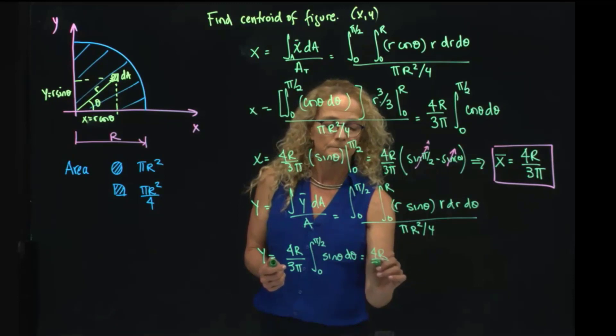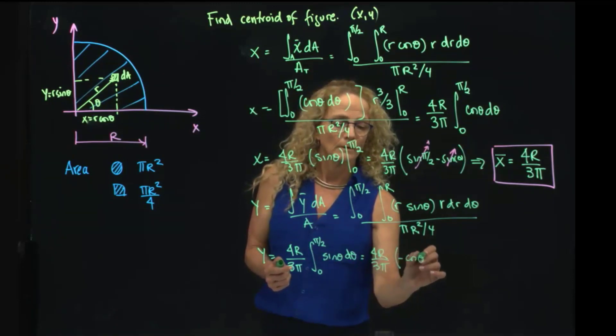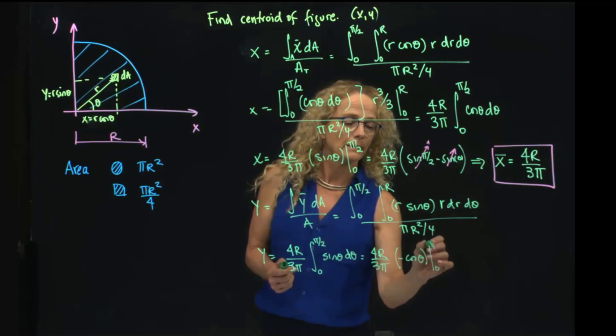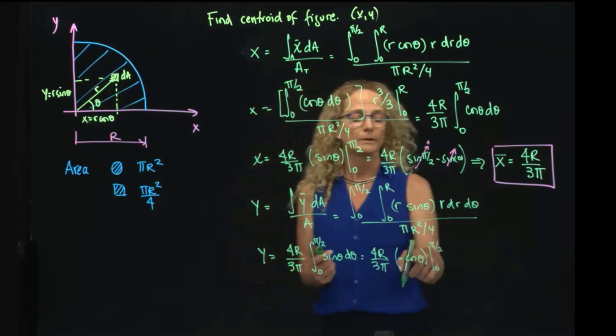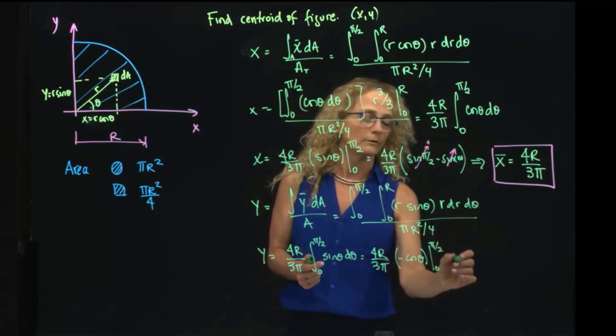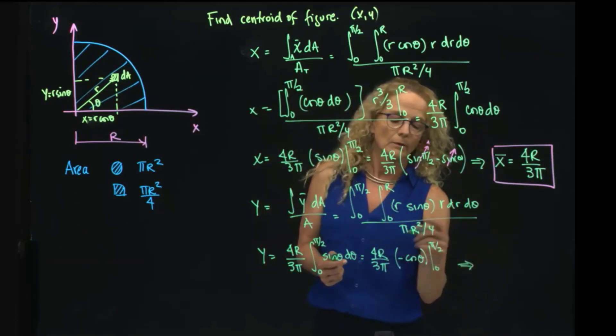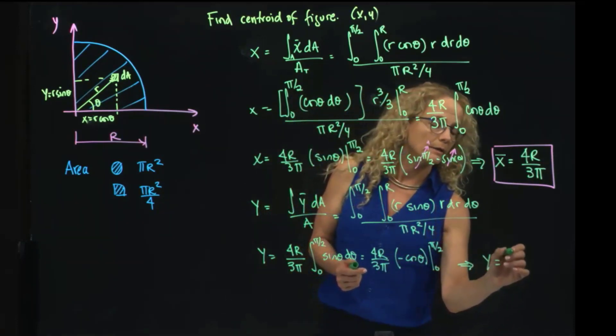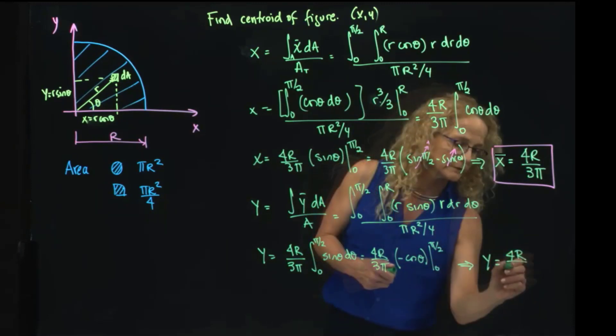When I evaluate in pi half, it gives me 0 minus 1, with this minus it gives me the 1. So at the end, this is 4r over 3 pi.